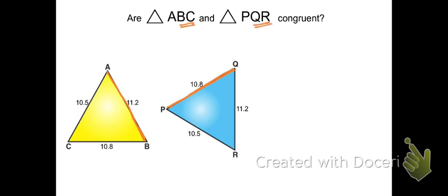BC and QR. BC is 10.8 and QR is 11.2. So again, not working out.